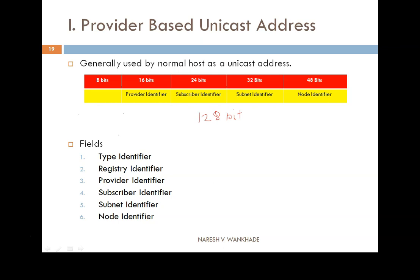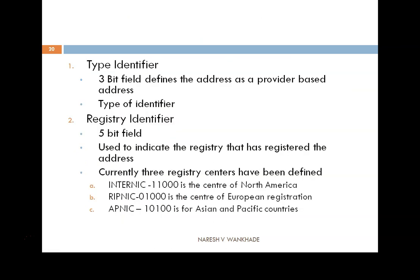The first field is of 8 bits and this 8-bit field has two subfields. The first subfield is the type identifier, which is 3 bits, and another one is of 5 bits which belongs to the registry identifier. The next field is the provider identifier. Let's see all these fields one by one.